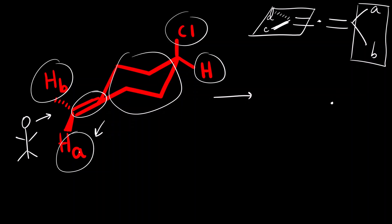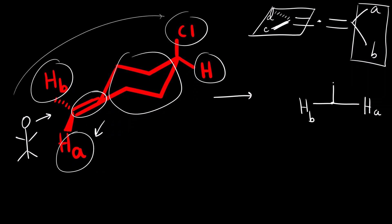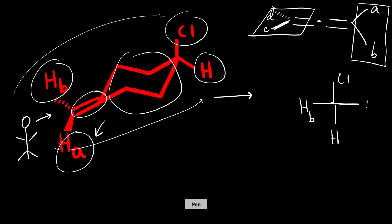When viewing from that side, HA is coming out toward you — it is above the plane, appearing on the right. On the left is HB. On the top there is chlorine, and at the bottom there is hydrogen. Since we need to find the topicity for HA, we replace HA with deuterium.